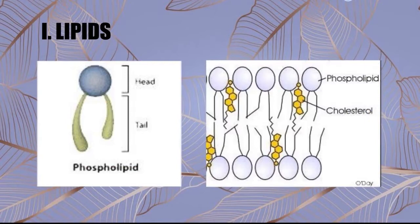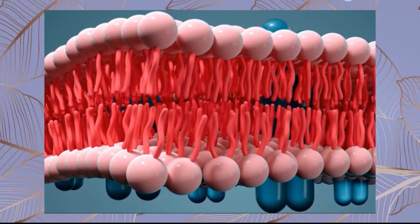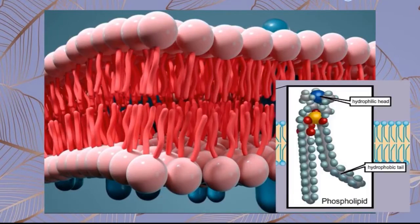There are two types of lipids: phospholipids and cholesterol. The phospholipids make up the entire body of the cell membrane and provide a barrier as well as a pathway for small molecules to cross the membrane. They are arranged in a bilayer form wherein their heads, which are hydrophilic or water-loving, face outwards, while their hydrophobic tails face each other in the middle of the bilayer.